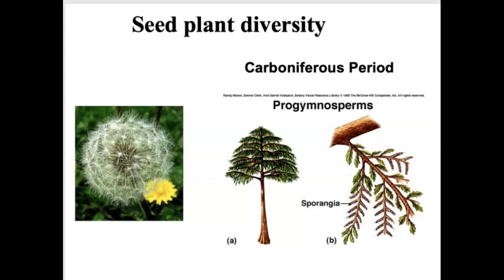This evolutionary period of seed plant diversity happened about 320-ish million years ago, beginning during the Carboniferous period, and it's been obviously going on ever since. This is, in regards to life, a short evolutionary journey compared to some of the other groups we've discussed that have been around for billions of years.